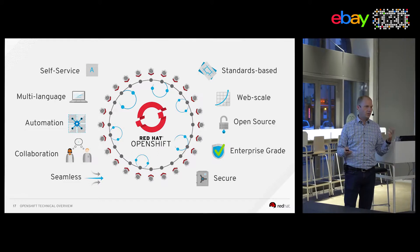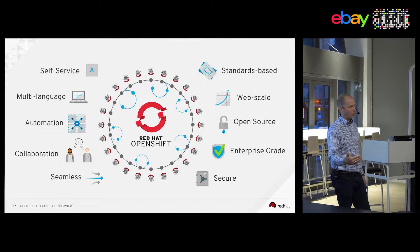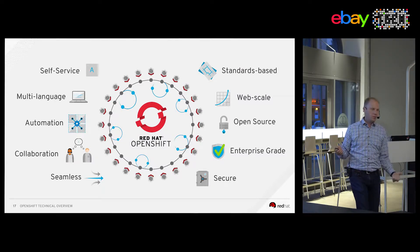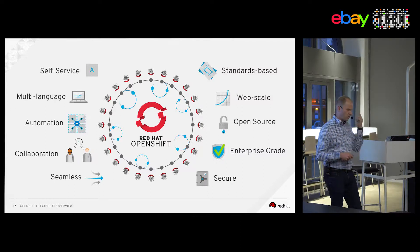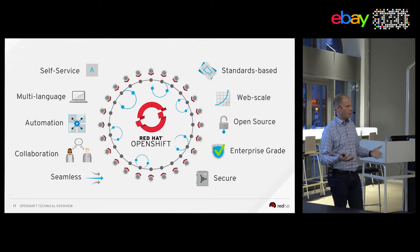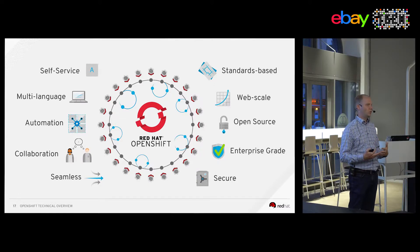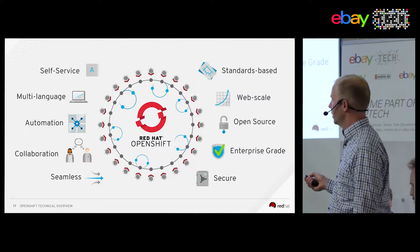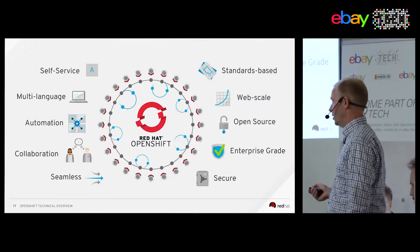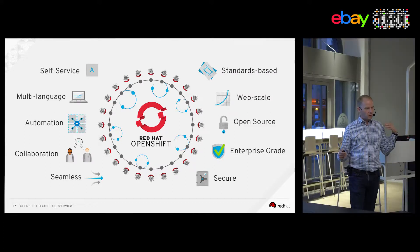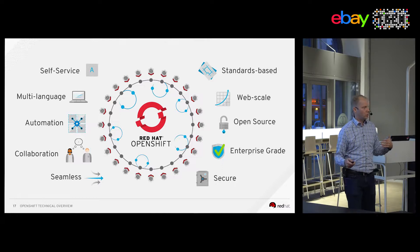OpenShift has a self-service capability — there's an API based on Kubernetes, extended with a few features, and a web UI to access it. It's multi-language; we don't focus on a specific programming language, though we offer builder images for certain languages as a way to easily build container images. Automation is at the center of all of this — the Kubernetes orchestration features plus additional capabilities to deploy applications, roll back changes, and roll out previous versions.